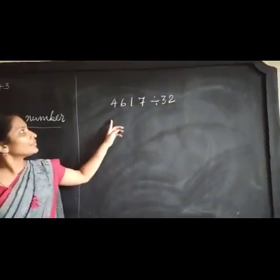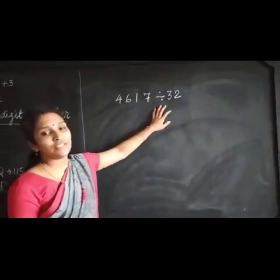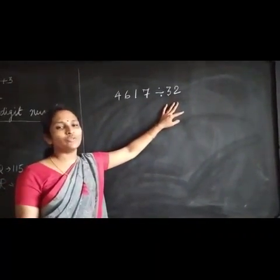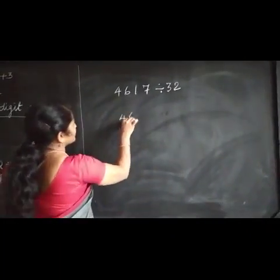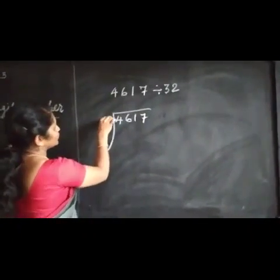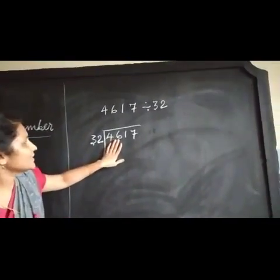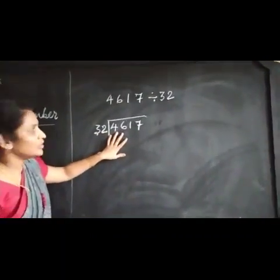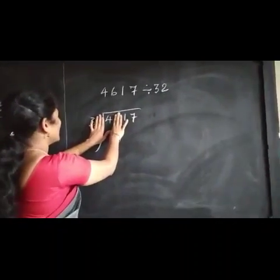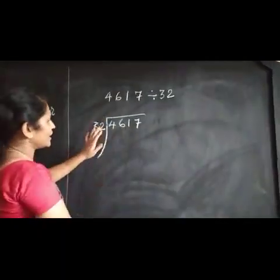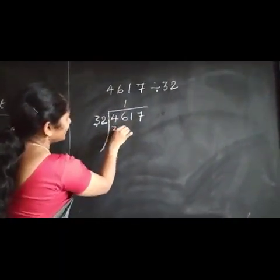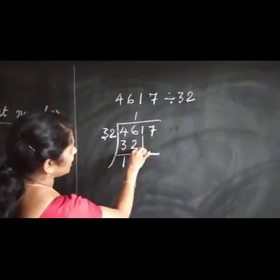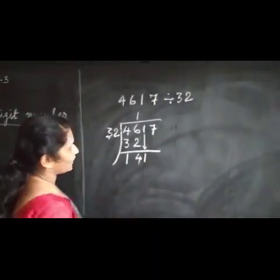Let's do one more question: 4617 divided by 32. Here also we don't know the table of 32, so we have to guess the number. In 46, how many 32s are there? 46 is bigger than 32. We see how many 3s are in 4: 3 ones are 3, so we write 1. 33 ones are 32. 6 minus 2 is 4, 4 minus 3 is 1.